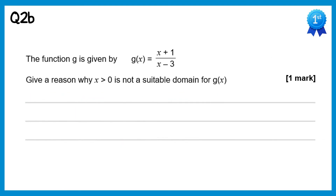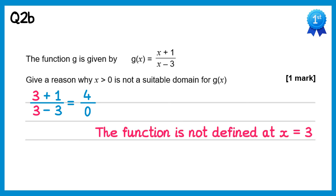For this question we need to explain why x greater than 0 is not a suitable domain for g(x) — we need to find a value where the function is not defined. In this case it's x equals 3, because substituting in 3 gives 3 plus 1 over 3 minus 3, which equals 4 over 0. You can't divide by 0, so the function is not defined at x equals 3.